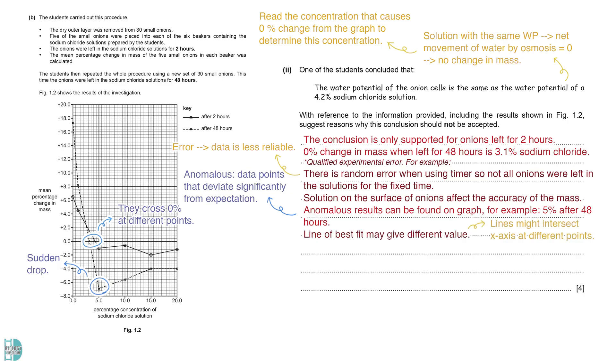The graph has a point-to-point joining. If a line of best fit is drawn, we might obtain a different value at the intersection. We do not test any intermediate concentrations of sodium chloride between 1% and 5%. It might change the shape of the line completely if we have other points in between and alter the points where they intersect the x-axis.